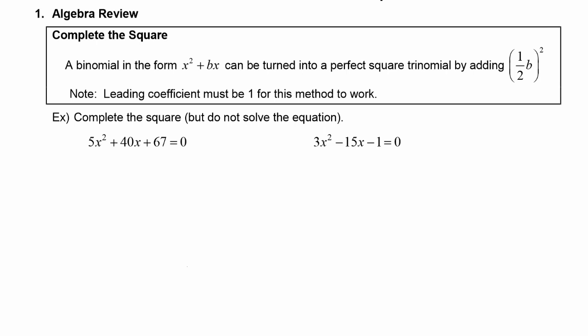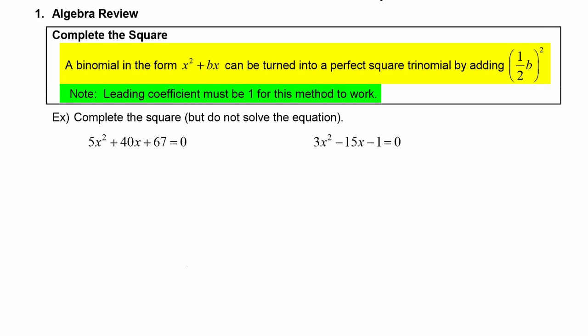First, let's review how to complete the square. A binomial in the form x squared plus bx can be turned into a perfect square trinomial by adding the quantity one half b squared. An important note is that the leading coefficient must be one for this method to work. The leading coefficient is the coefficient of the x squared term, so the coefficient of x squared has to be one in order for adding this constant to work.